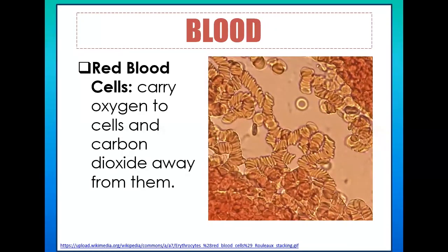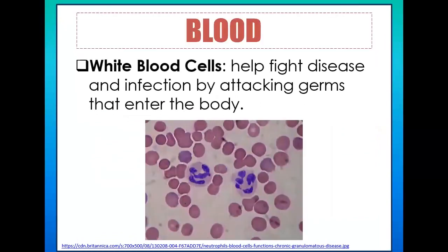Now let's proceed to another cell element: white blood cells, or WBCs. The other term for WBCs is leukocytes, spelled L-E-U-K-O-C-Y-T-E-S. White blood cells help fight disease and infection by attacking germs or foreign materials that enter the body, including other pathogens — so this component is purely for immunity.